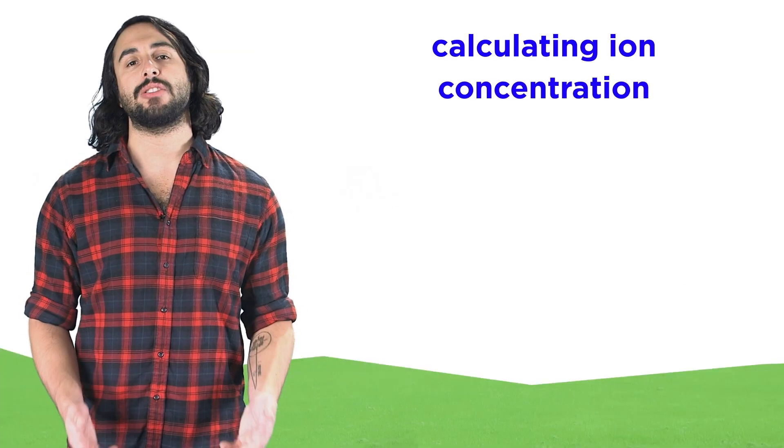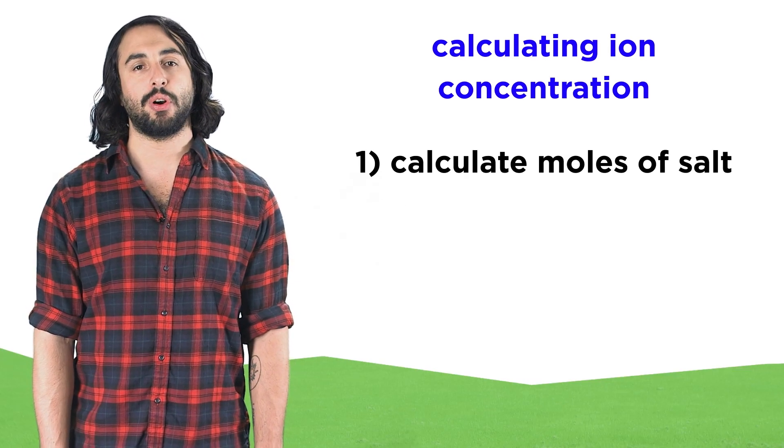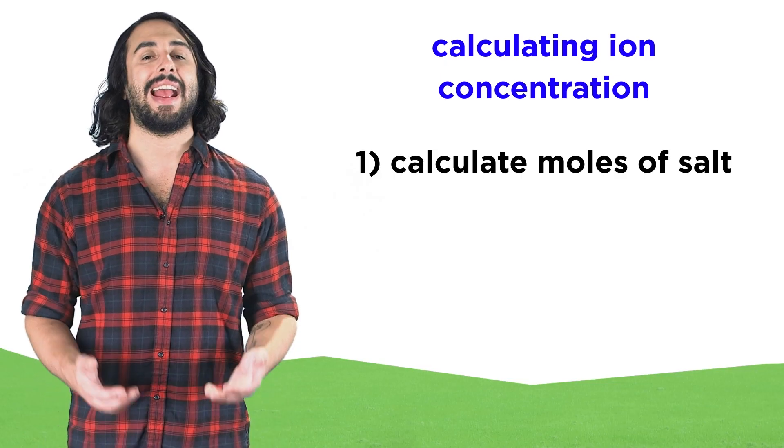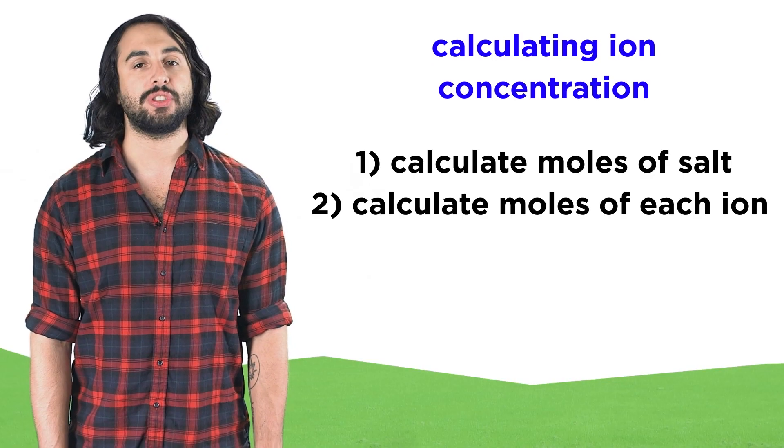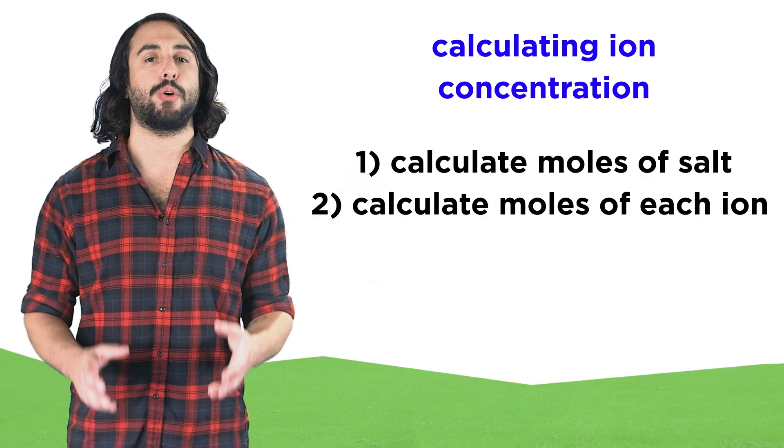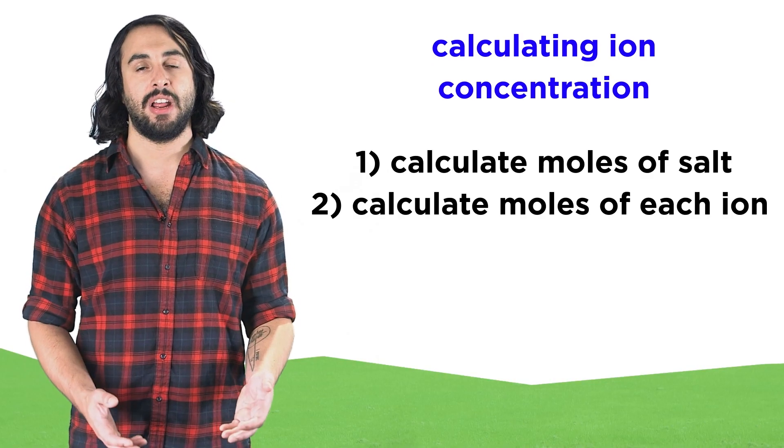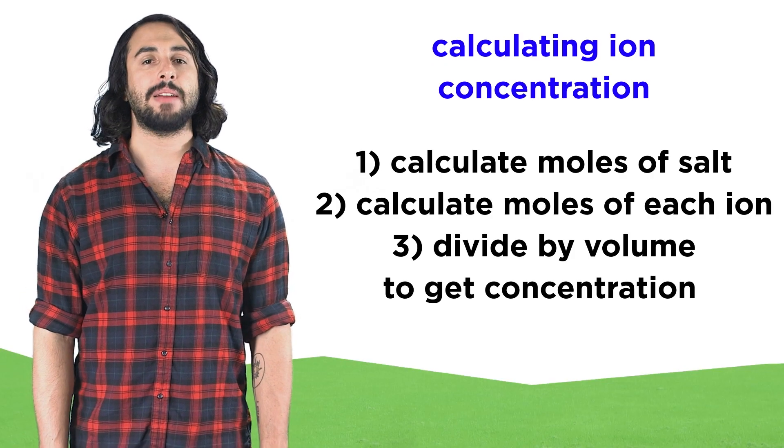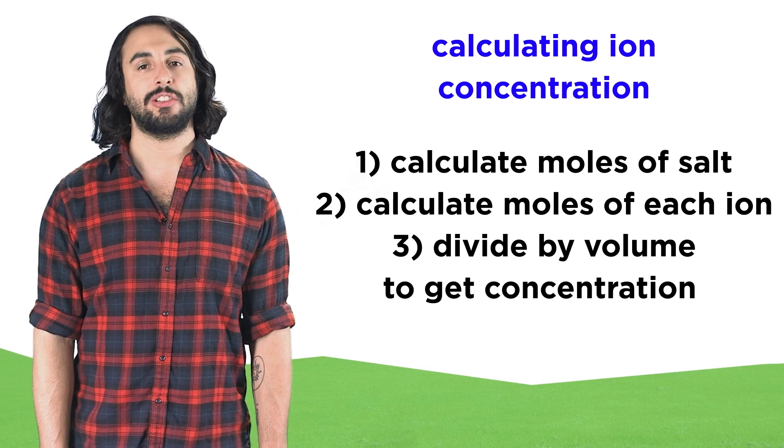Hopefully we now see the pattern involved in this calculation. First we simply need the number of moles of the salt, which we can get from the mass used and the molar mass of the salt. Once we have the number of moles of the salt, we multiply this number by the subscript for a particular ion to get the moles of that ion that will result upon dissociation. Dividing by the volume then gives us the concentration with respect to that ion.